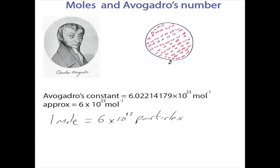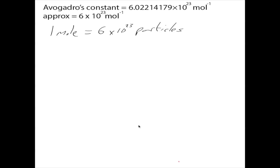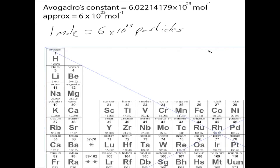Let's bring up the periodic table. If we look at an element — for example sodium, which you've probably heard of in sodium chloride, or table salt — you'll notice each element has two values. For sodium, one value is 11 and the other is about 23. The value 11 is called the atomic number.